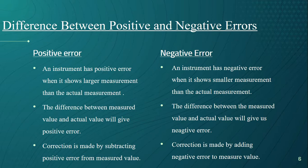An instrument has positive error when it shows larger measurement than the actual measurement. To calculate positive error, we take the difference between measured value and actual value. To remove the errors from the reading, correction is made by subtracting positive error from the measured value.